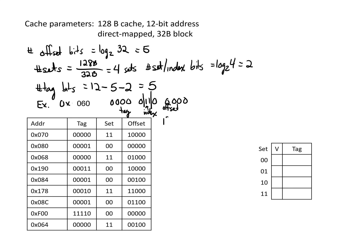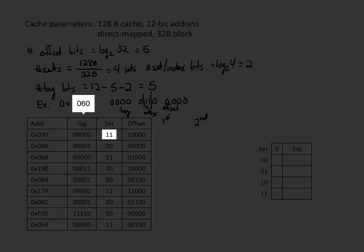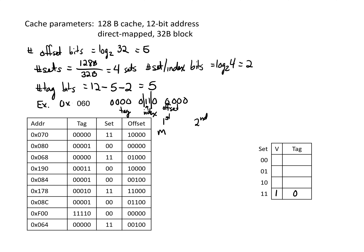We'll look at these accesses on the first pass and then the second time through, since this simulates a loop — we'll find that repeating changes whether some accesses hit or miss. Starting on the first line, address 0x070 maps to set three (binary 11), so we mark it valid with tag zero — this is a miss. The next maps to set zero, which is empty, so also a miss; we put tag one in and mark it valid. The following access returns to set three, and the tag zero there matches, so this is a hit.